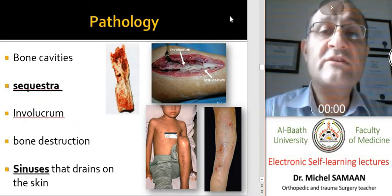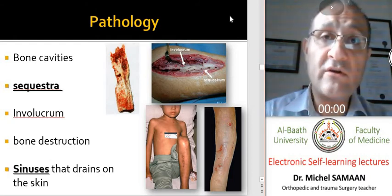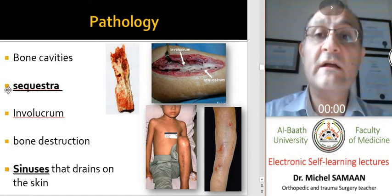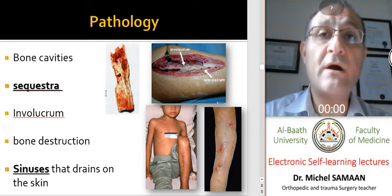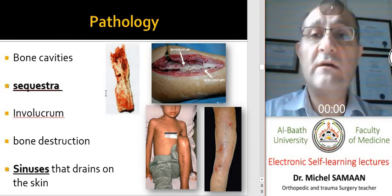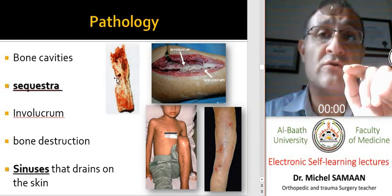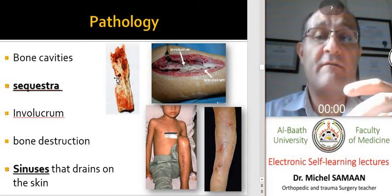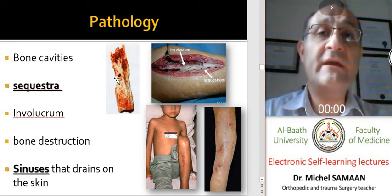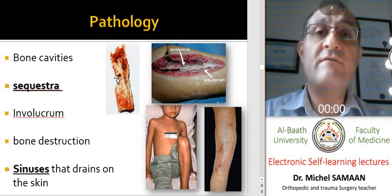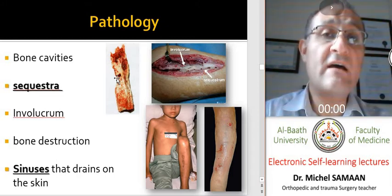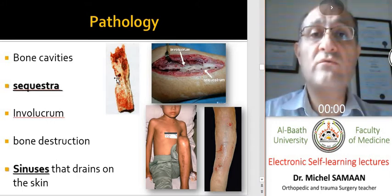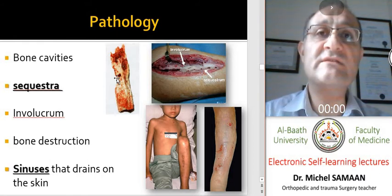The pathological changes characterizing chronic osteomyelitis are very important. First, we have dead bony parts — sequestra — in the area of infection. These are the main cause of the continuity of infection in chronic osteomyelitis. Dead parts provide an excellent local environment for bacterial colonization, sheltered from antibiotic therapy, because there is no blood circulation in this dead area.